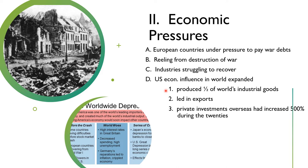Meanwhile, United States economic influence in the world expanded during the 1920s. The United States was producing half of the world's industrial goods and led in exports. Private investments from the United States overseas had increased 500% during the 1920s, which in the United States was a time of assumed economic boom.